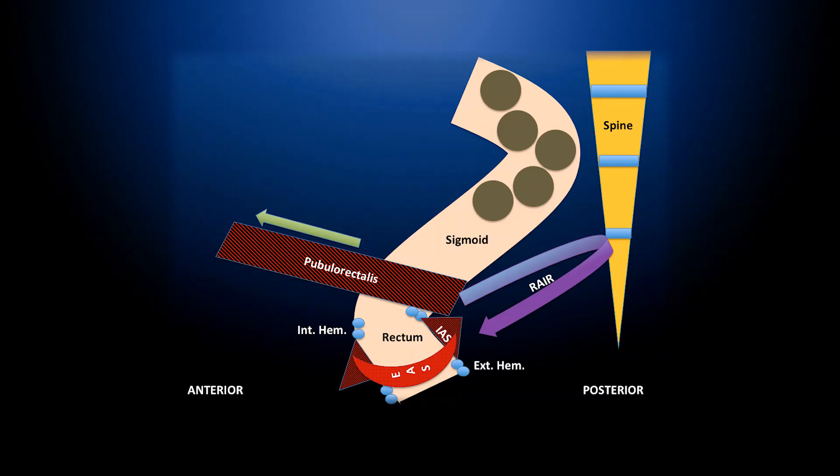At the top, you have the puborectalis muscle. In the anorectal canal, you have the internal anal sphincter and the external anal sphincter. Above the internal anal sphincter, typically we have the hemorrhoidal plexus, which we call the internal hemorrhoids, and below the dentate line, we have the external hemorrhoids.